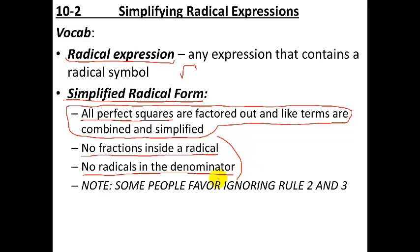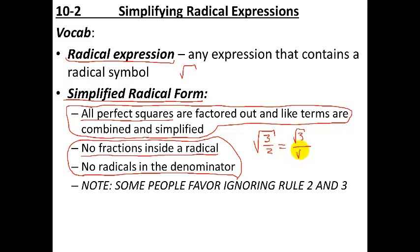However, having radicals in the denominator and or having fractions — a lot of people, myself included, don't actually think this is such a bad thing. For example, the square root of 3 halves, I personally think that's a pretty okay answer. However, this has a fraction inside the radical. And even if you wrote it as the square root of 3 divided by the square root of 2, it has a radical in the denominator, so neither of these would be considered simplified radical form. But they are still pretty darn useful.